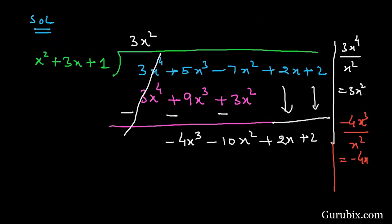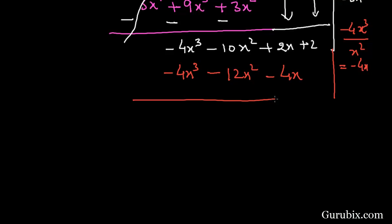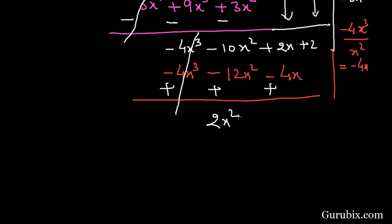So the next term in the quotient is minus 4x. If we multiply all the terms of the divisor by minus 4x, we have minus 4x cubed minus 12x squared minus 4x. Now we shall change the sign of these terms, then these two terms will be cancelled. Here we have 2x squared plus 6x plus 2.